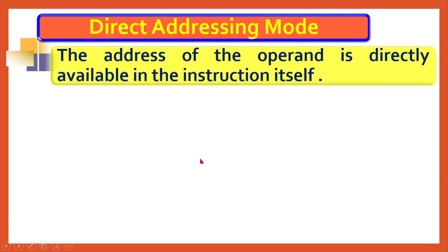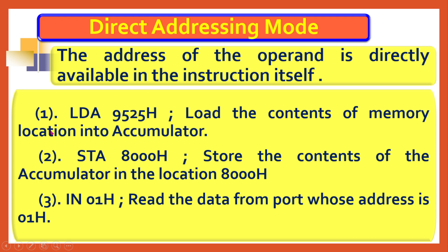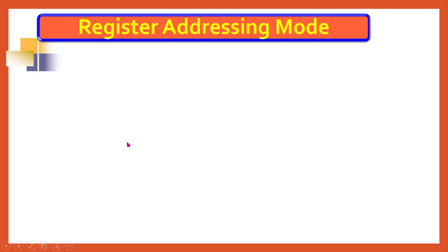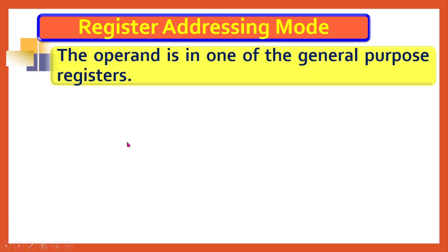Direct addressing mode: as the name suggests, the address of the data is written as part of the instruction itself. For example, LDA 9525H means load the accumulator from memory address 9525H. STA 8000H means store the accumulator content to memory address 8000H. Input and output instructions also support direct addressing, but it is 8-bit addressing because the 8085 supports only 8-bit I/O devices — that is 2 to the power of 8 I/O devices — whereas memory is 2 to the power of 16, which is why we use a 4-digit number for memory and only 8-bit for I/O.